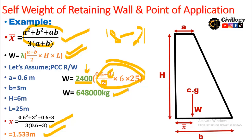The result is 648,000 kg. This is the total weight of the 25-meter long wall. To get the weight per meter length, we divide by 25, which gives the self-weight of the retaining wall per meter. I hope you have understood the topic. For more videos, please subscribe to the channel and press the bell icon to get video updates.